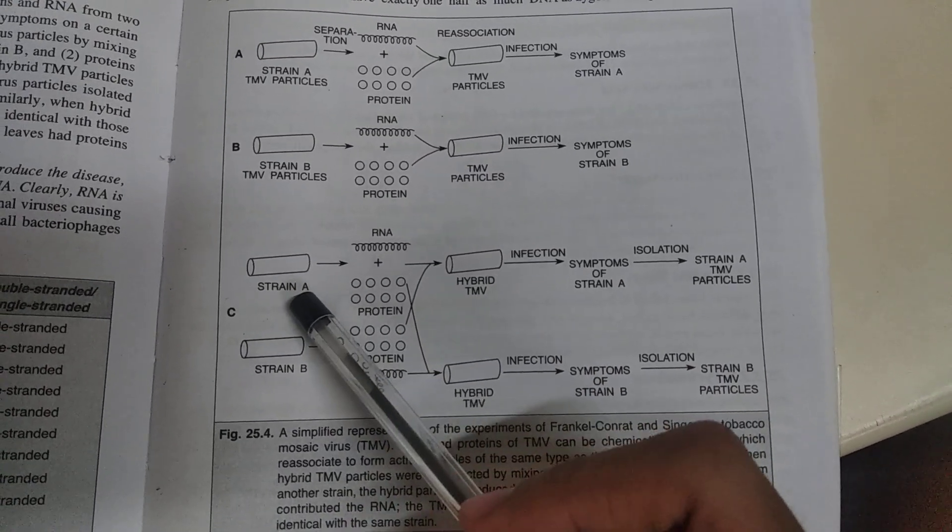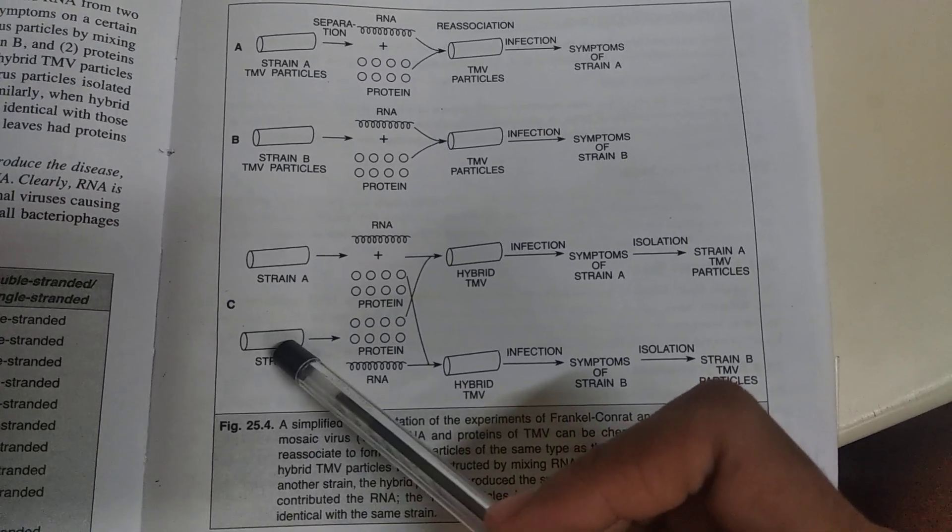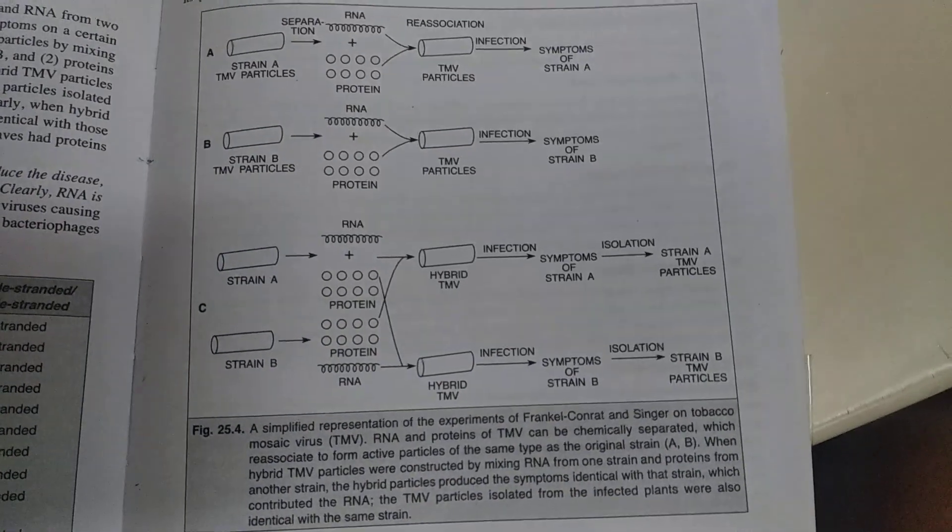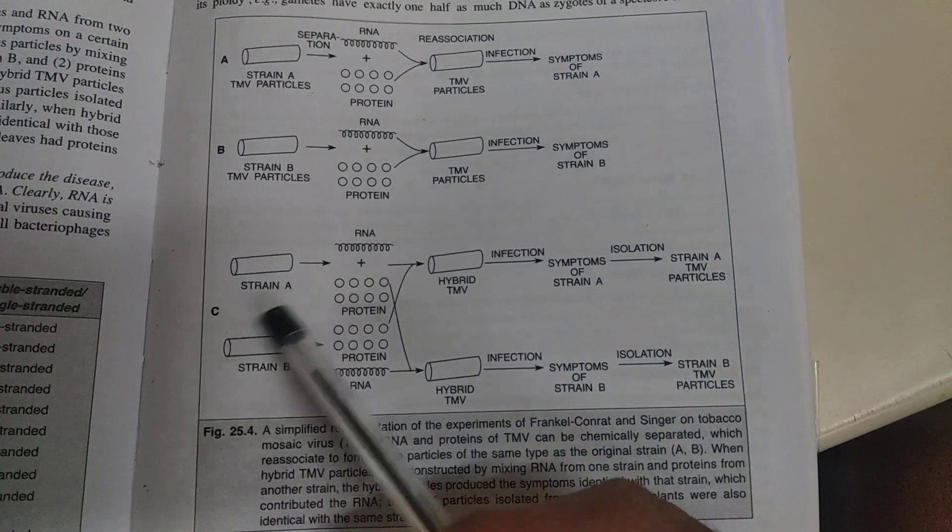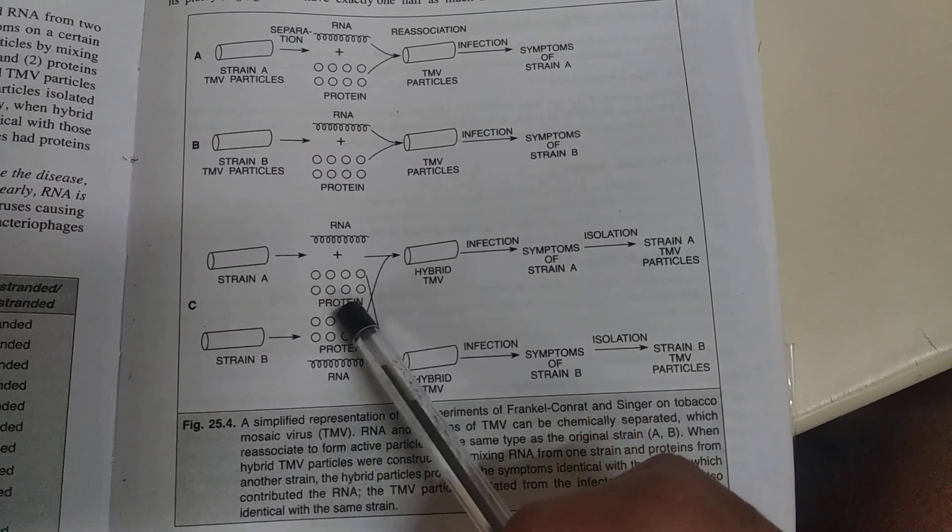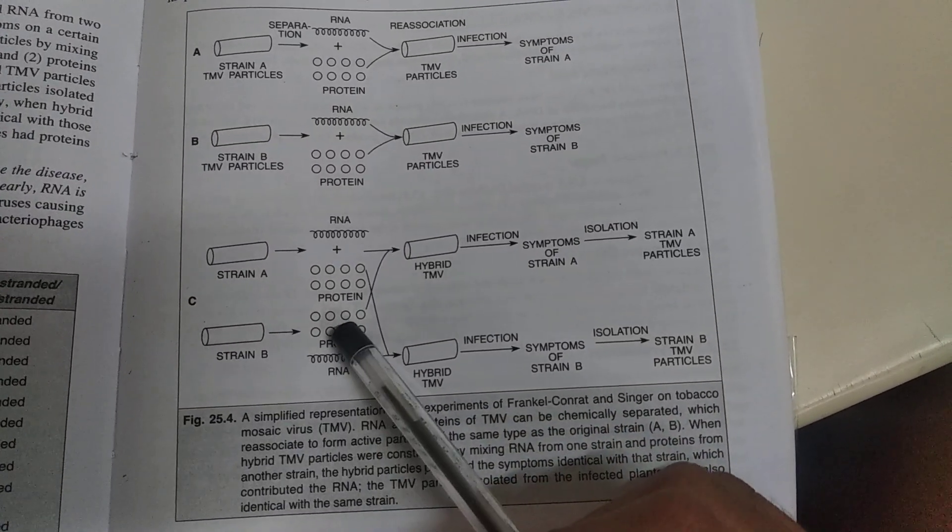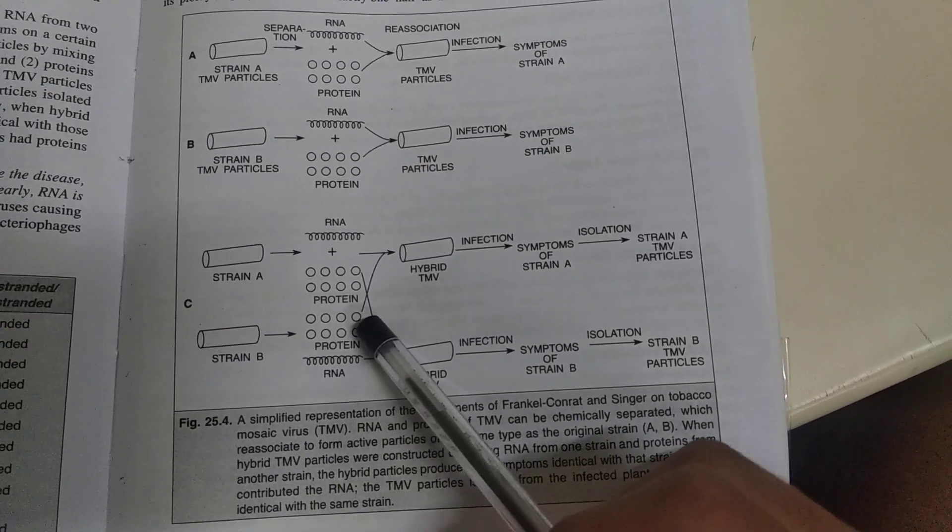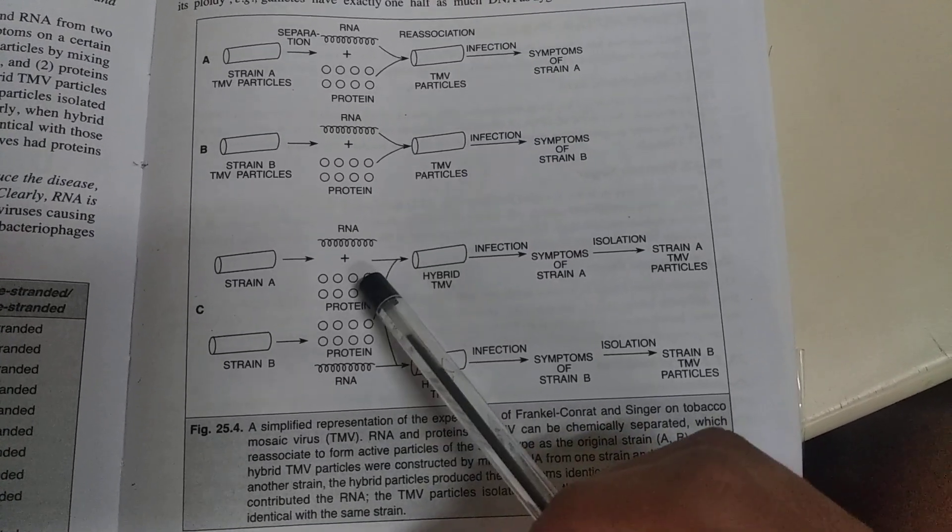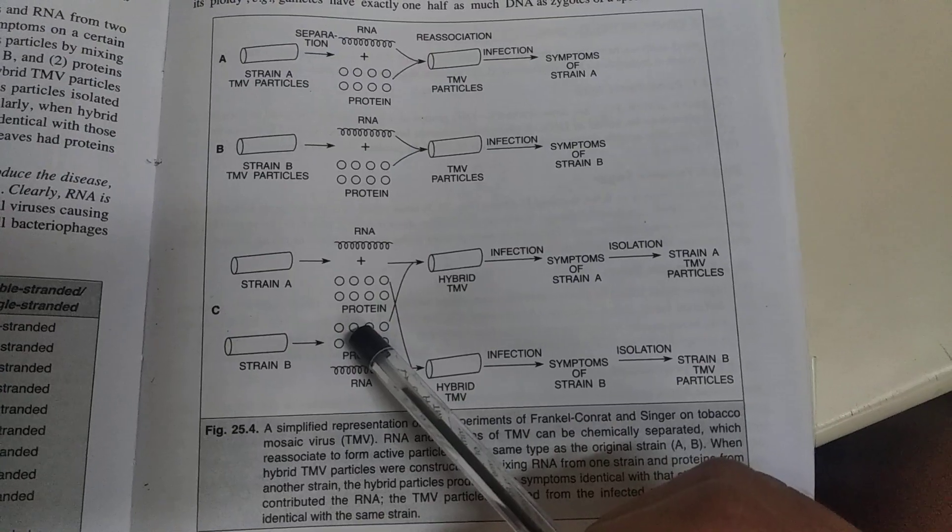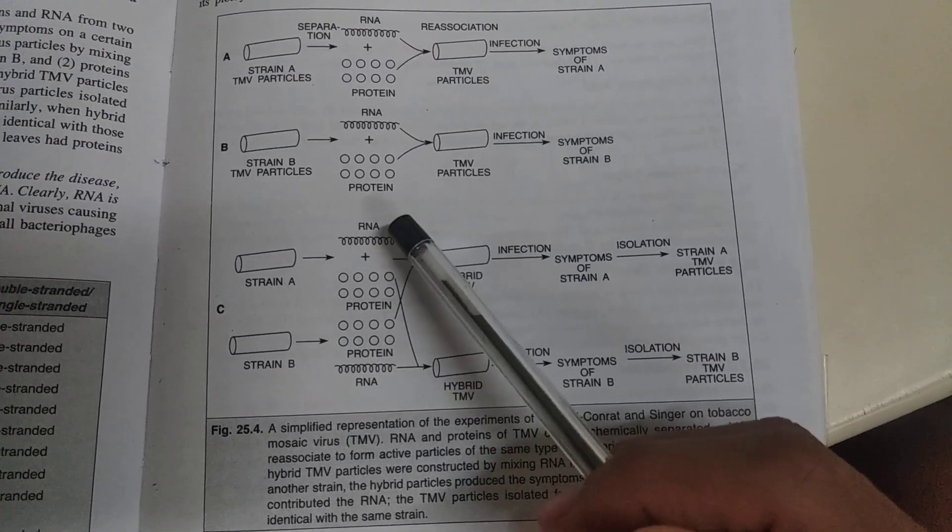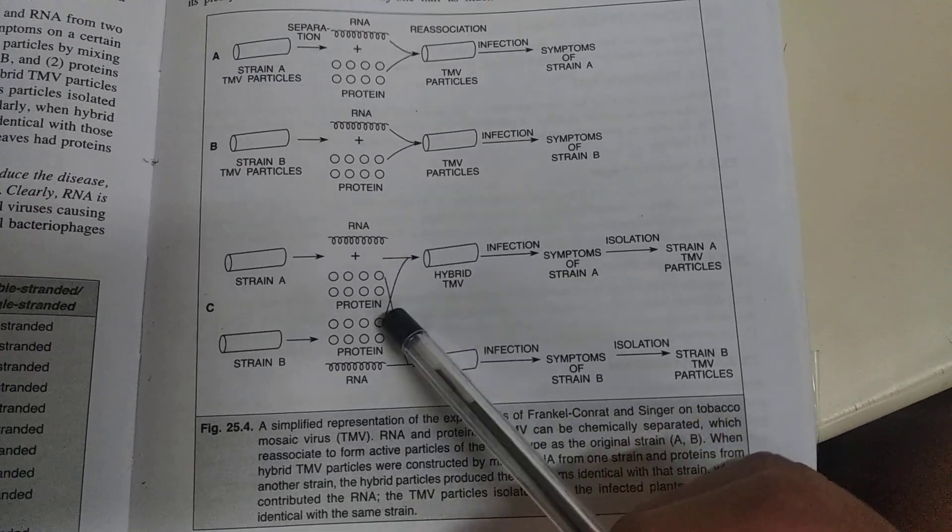The experiments were done in two different host plants. Both strain A and strain B were used, but while infecting, they interchanged the proteins between the two strains. They infected the host plants with RNA of strain A and protein of strain B.